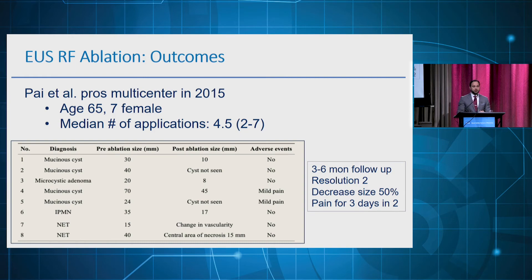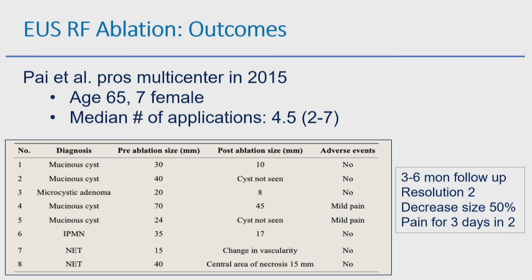Another study looked at eight patients — six with pancreatic cysts and two with neuroendocrine tumors — who underwent EOS RFA and were followed up for three to six months. Two patients with cysts had complete resolution, there was a significant decrease in tumor size in 50% of patients, and two patients developed pancreatitis which resolved quickly after a few days.